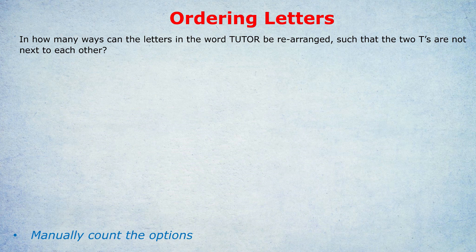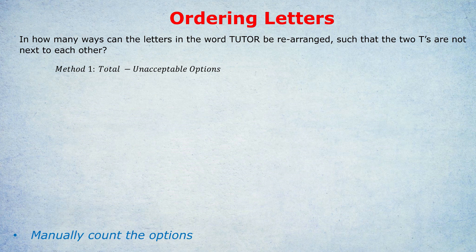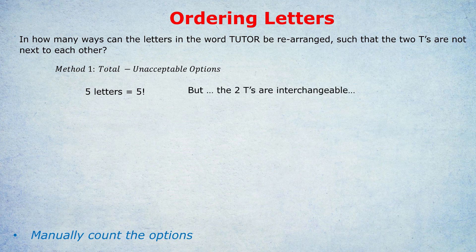Method number one is that we count the total number of arrangements without any conditions and then take away all the unacceptable options. Let me show you that method first. It's fairly involved but then we'll move on to a different method and see which one you prefer. So what's the total number of arrangements? You can pause the video and tell me this because it's the same as in previous questions. TUTOR has five letters and two of them are duplicates so we divide by two factorial.